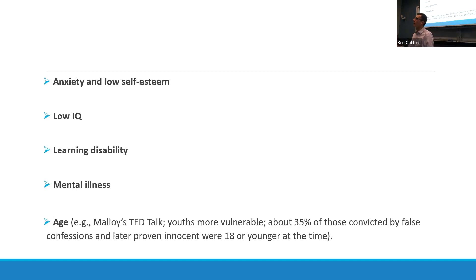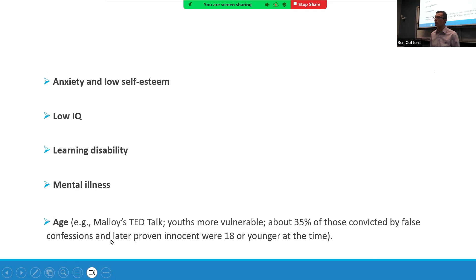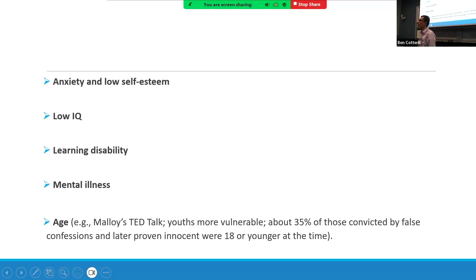In 25% of wrongful imprisonment cases there was a false confession, but in 35% of those cases the person who falsely confessed was 18 years old or younger. Lindsay Malloy's TED talk on juveniles in the criminal justice system covers this topic well.